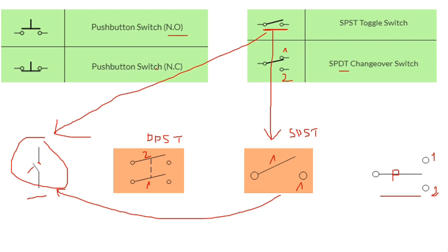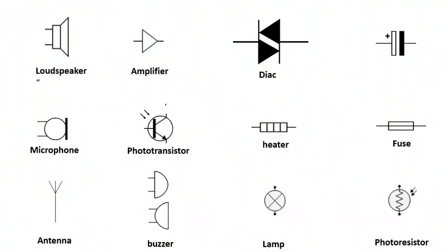This is a push button switch that is normally closed (NC). It is closed normally — when you push it, it will be opened, but normally it is closed.